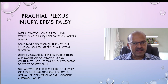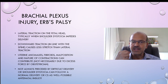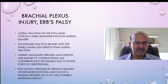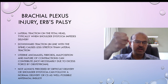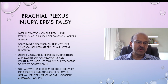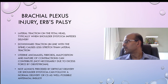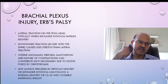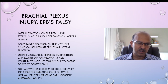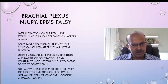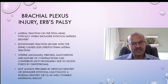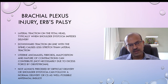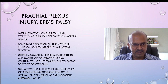There is lateral traction on the fetal head typically when shoulder dystocia impedes the delivery, and downward traction causes less stretch. When you are pulling in line with the spine there is less stretch than when you are turning the head and pulling, but it depends on the situation — how the head is descending, how the baby is rotating. The obstetrician needs to decide and manage, but as far as possible avoid a significant lateral stretch if possible.